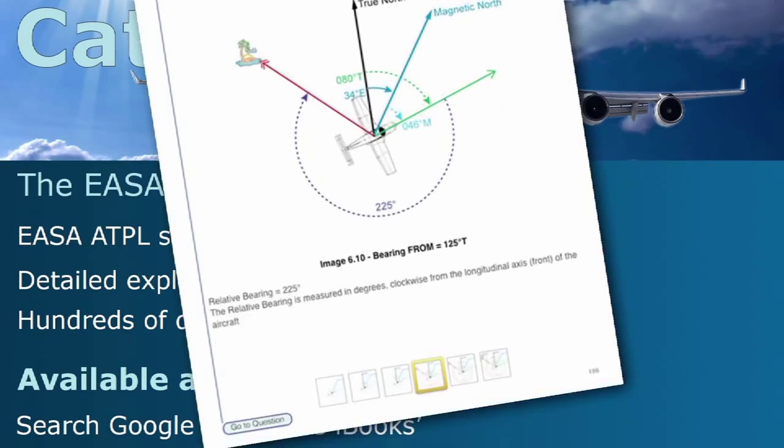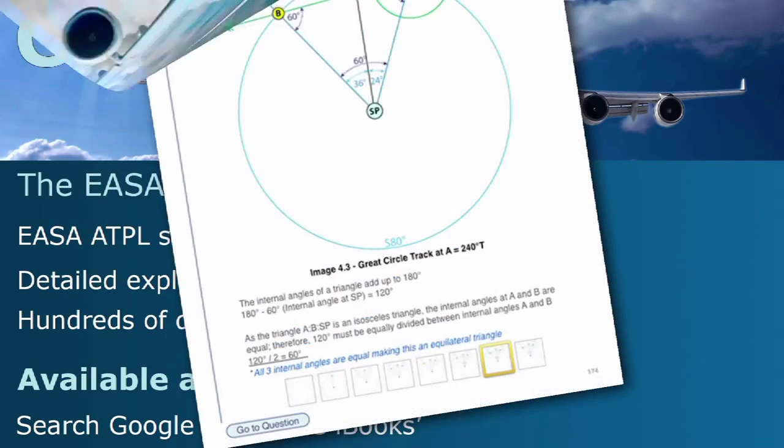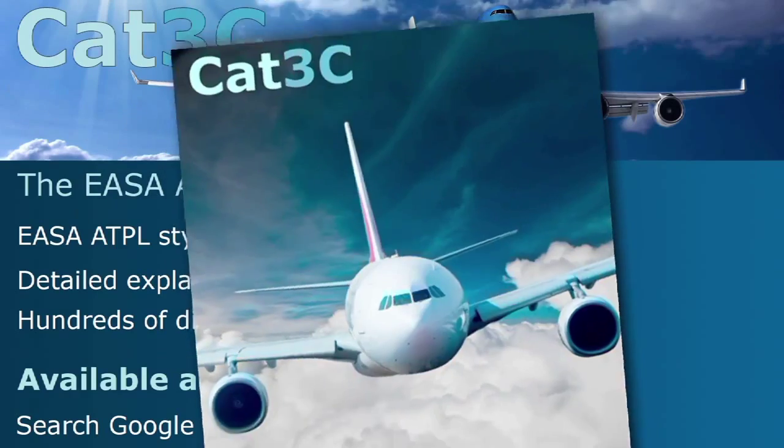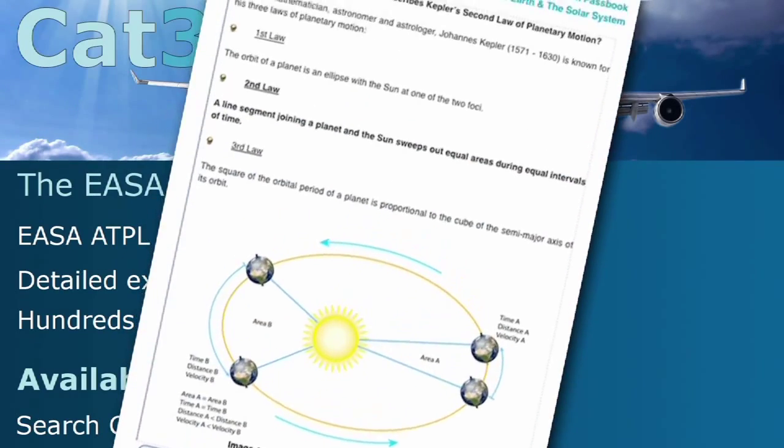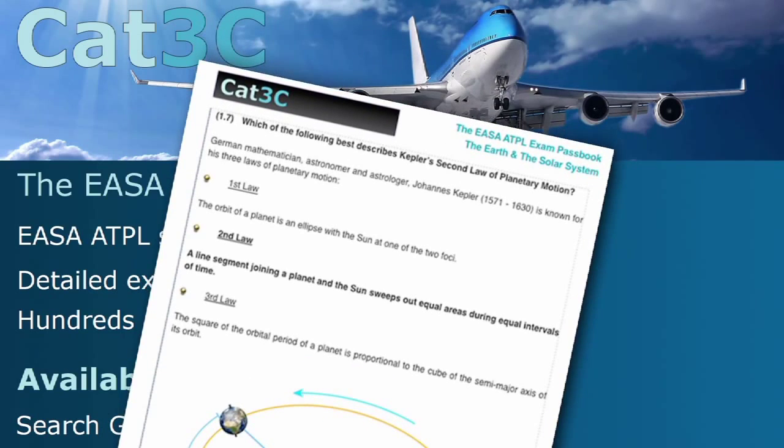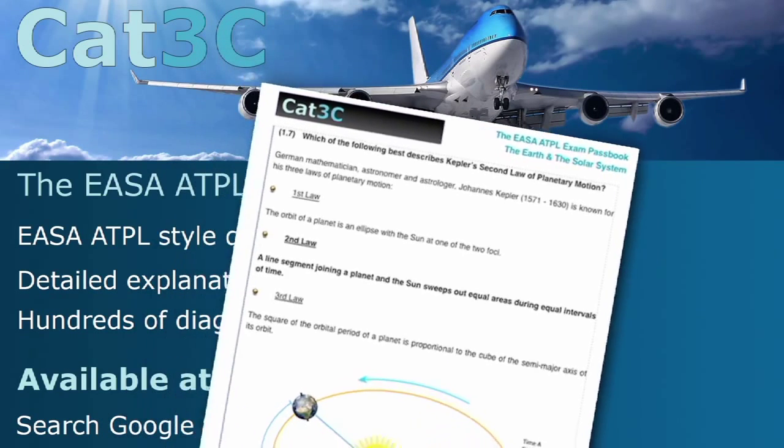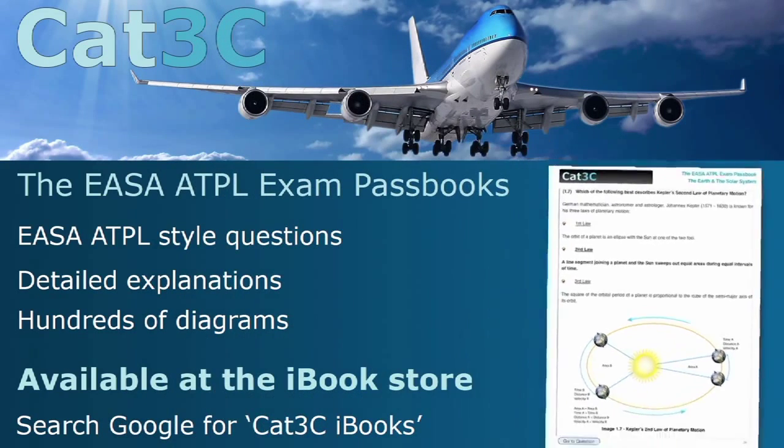The passbooks contain hundreds of exam-style questions and are supported by clear, in-depth explanations and interactive diagrams. The link to the iBooks can be found on the webpage below or at the Cat3C website at the Bookstore tab.